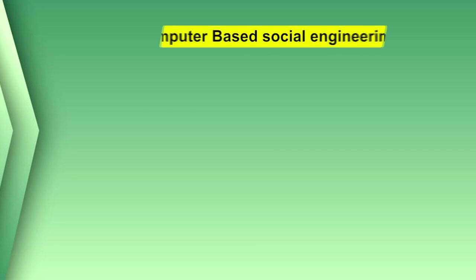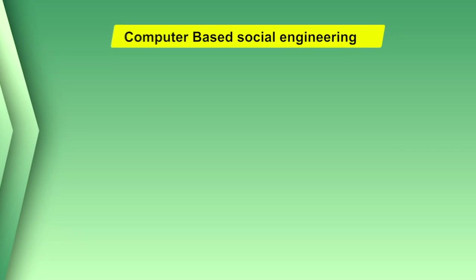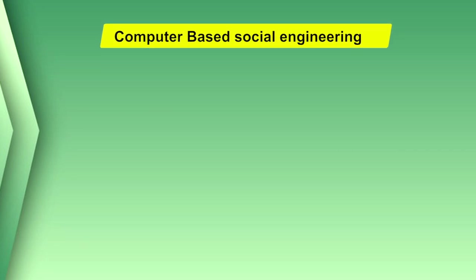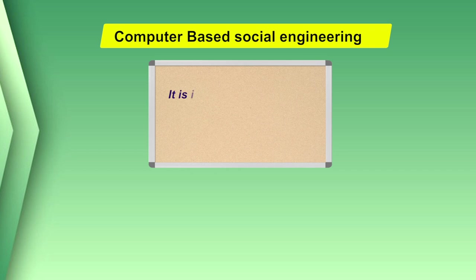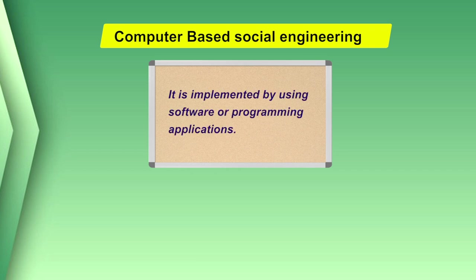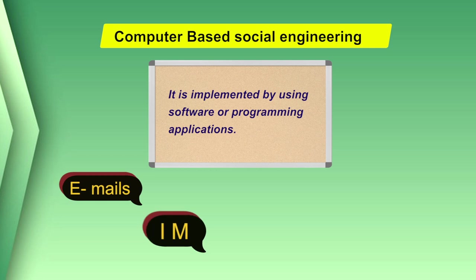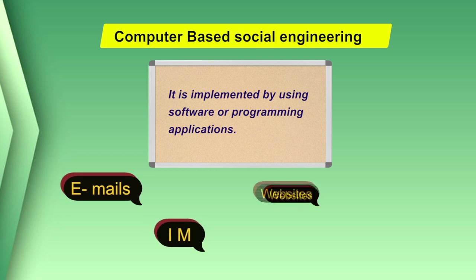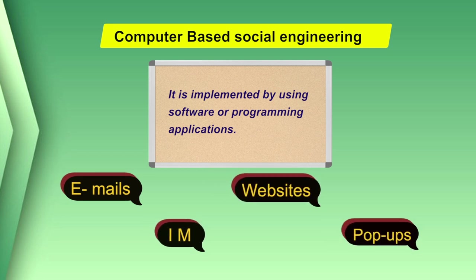The third type of social engineering is computer-based social engineering. Computer-based social engineering is implemented by using software or programming applications like emails, instant messengers, websites, pop-ups, etc.